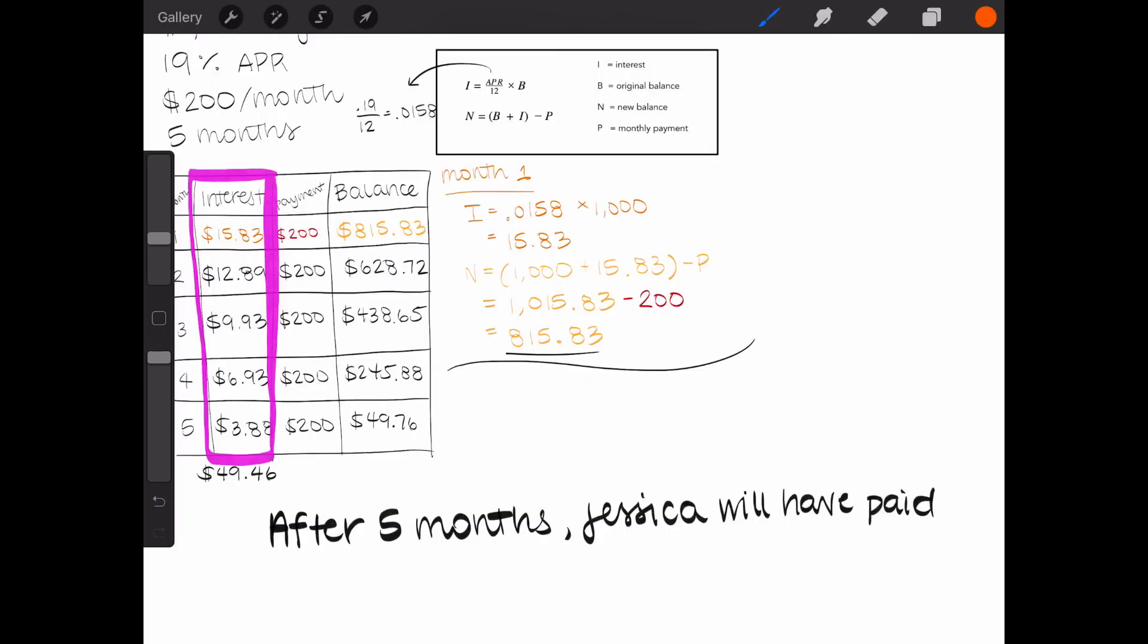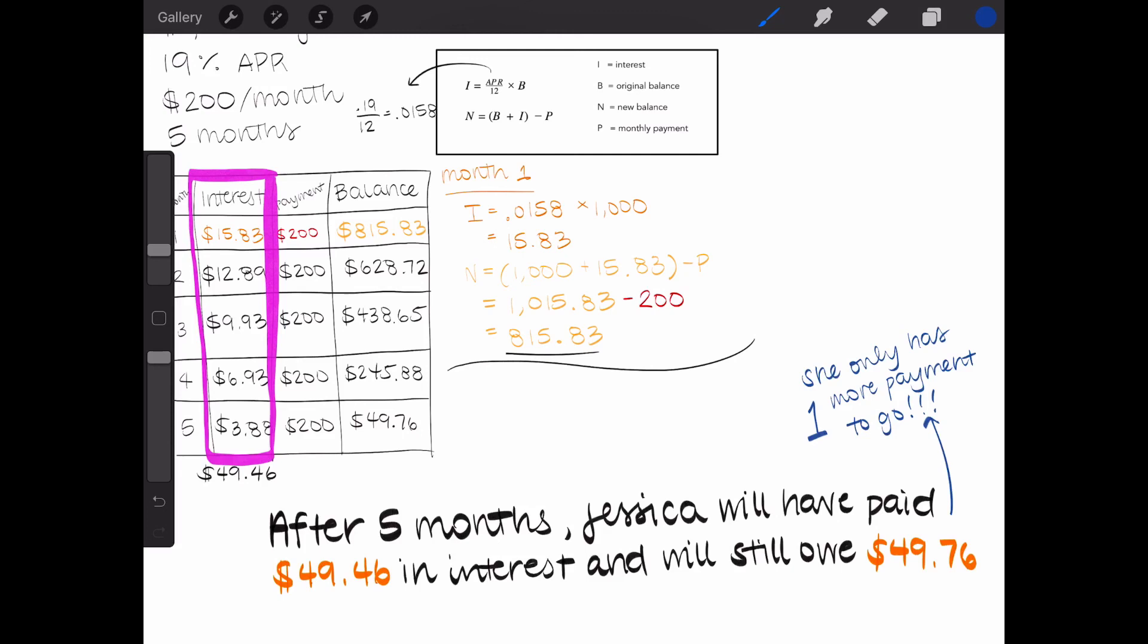So after five months, Jessica will have paid $49.46 in interest and will only owe $49.76, which means she'll pay off her credit card in month six.